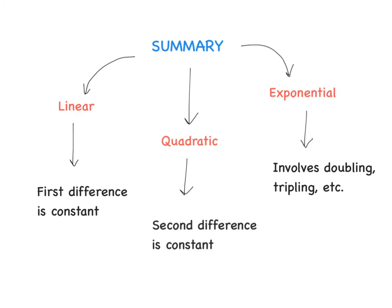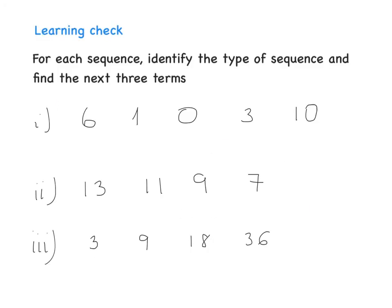Quick summary: there are three types of patterns — linear, quadratic, and exponential. Linear: the first difference is constant. Quadratic: the second difference is constant. Exponential: involves doubling, tripling, and so on. For the learning check, you have three sequences — identify which type each is by finding the first and second differences, then find the next three terms. See you tomorrow.